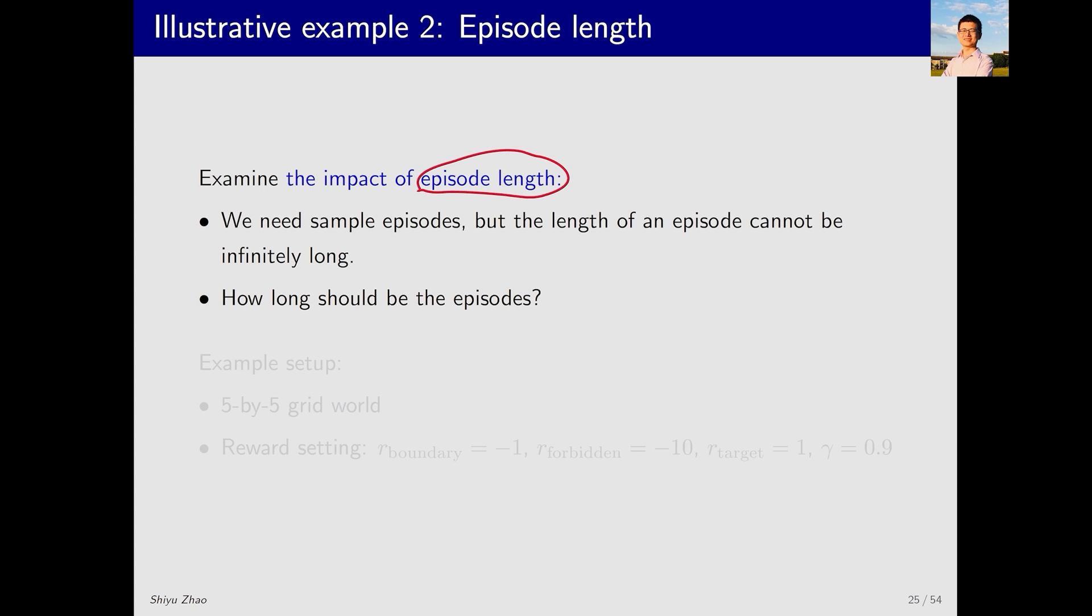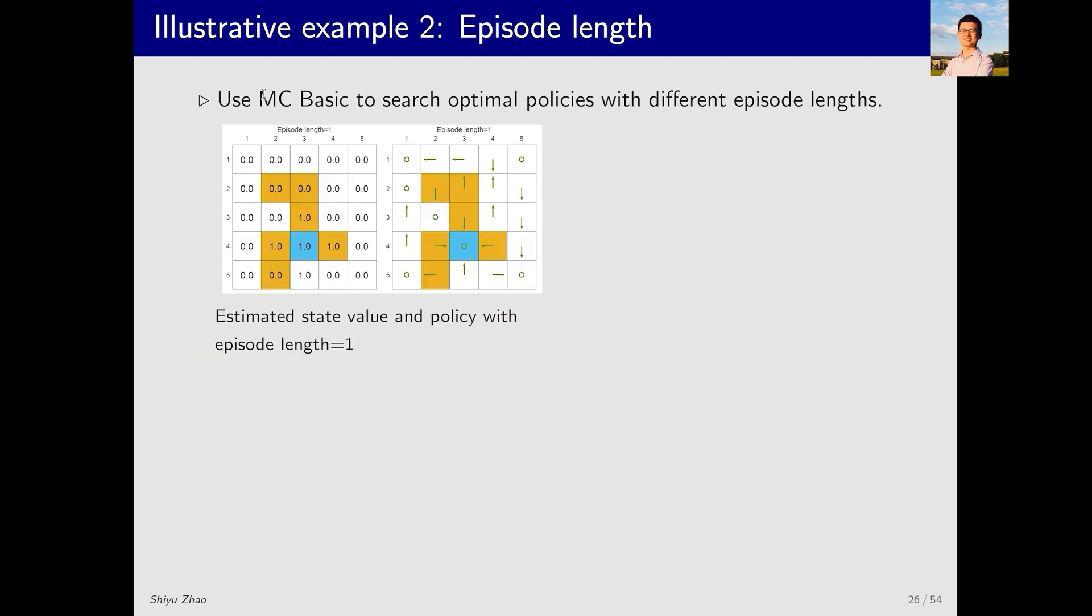Ideally, the longer the episode is, the more accurate the return is. However, in reality, episodes cannot be infinitely long. So, what episode length should we select? Here, in this grid world example, we have different settings. Let's examine the results obtained from MC Basic: optimal state value and optimal policy. The results are not good. Why? Because the episode length used here is only one.